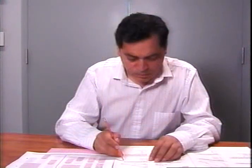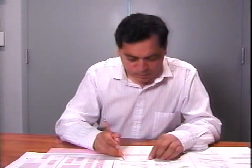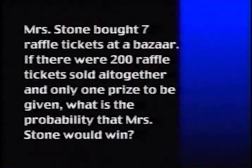Standard grids can also be used for answers involving fractions. For example, let's take the question: Mrs. Stone bought 7 raffle tickets at a bazaar. If there were 200 raffle tickets sold all together, and only one prize to be given, what's the probability that Mrs. Stone would win? The answer is 7 out of 200, or 7 two-hundredths.